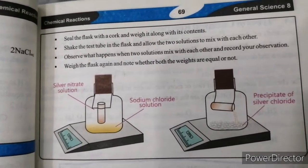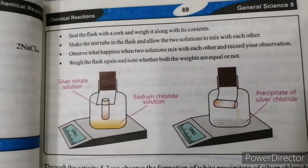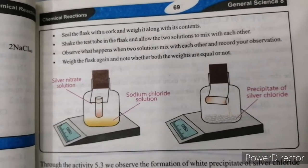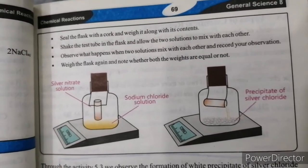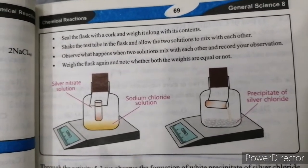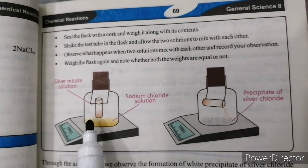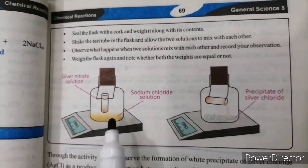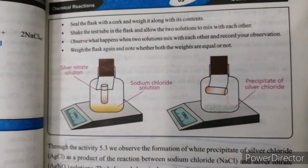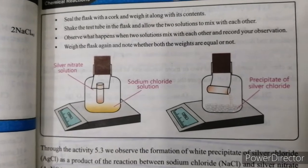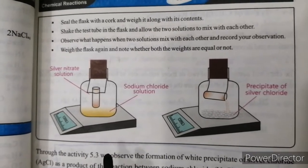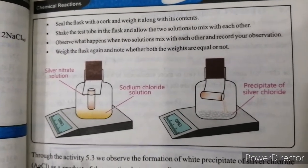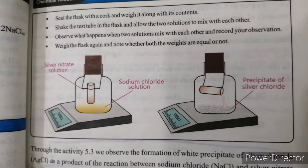You have to seal the conical flask. You have to weigh both things together and note it down. After that, you have to shake it so that the silver nitrate drops into the sodium chloride and mixes with it. After mixing, you have to do the weighing again and observe the result.